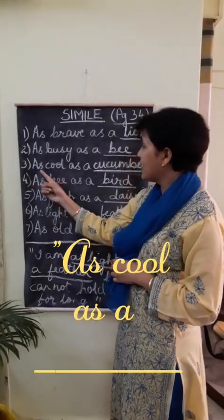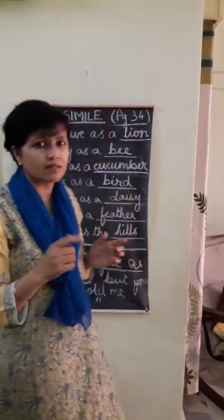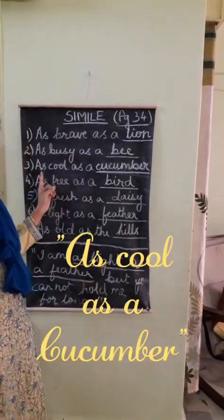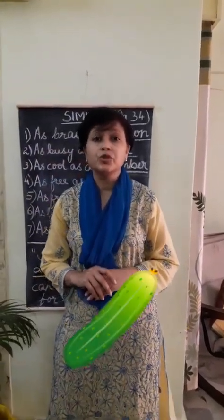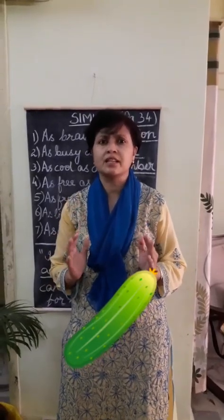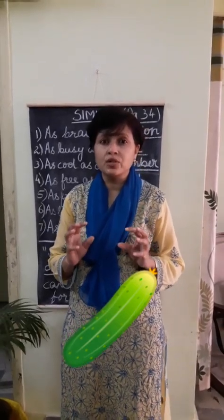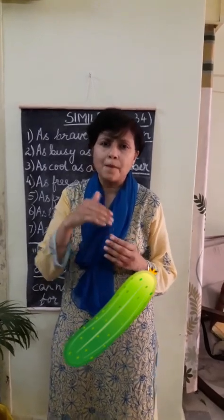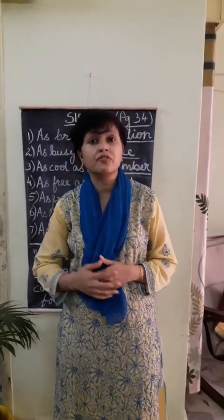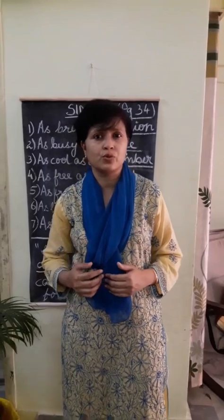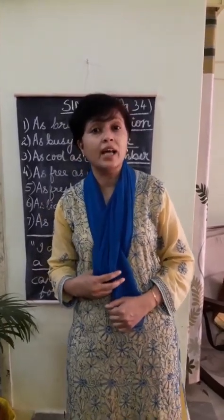Number 3: as cool as a cucumber. A cucumber is made up of 96% water, so it remains very cool. The cucumber is always much cooler inside than outside. That is why in summers you should eat a lot of cucumber, because it acts as a coolant, relieves heat, and helps you cool down. So the simile is as cool as a cucumber.